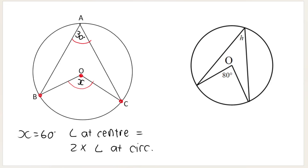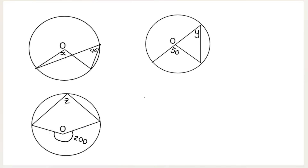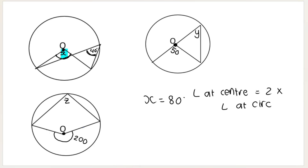For the next example, this is the angle at the center — it is 80 — and this is the angle at the circumference, so h will be half of the angle at the center. H will be 40. The angle at the center is two times the angle at the circumference. For x, y, and z: x equals 80 because x is the angle at the center. We have to assume O is the center of the circle. The angle at the center, 80, is two times the angle at the circumference.